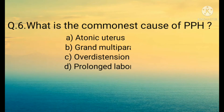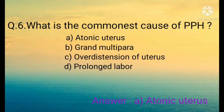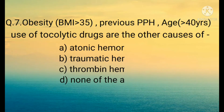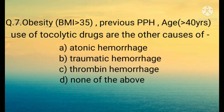Question number six: What is the commonest cause of PPH? Options are: A) Atonic uterus, B) Grand multiparity, C) Over-distension of uterus, D) Prolonged labor. The correct option is A) Atonic uterus.